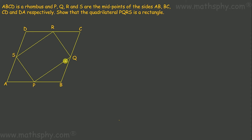What we have to show is that quadrilateral PQRS is a rectangle. First of all, ABCD is a rhombus, which means AB = BC = CD = AD — all four sides are equal — and AB is parallel to CD, and BC is parallel to AD. That's the basic understanding of a rhombus.